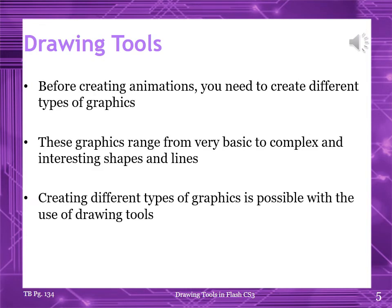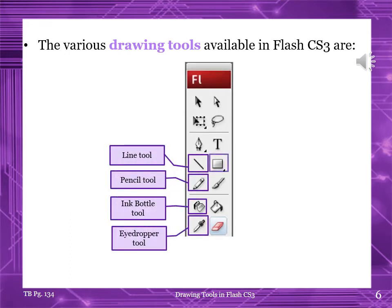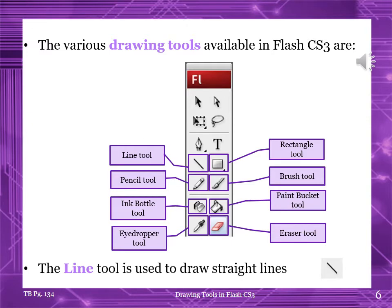Drawing tools. Before you create animation, you first need to create different types of graphics. These graphics can range from very basic to highly complex shapes and lines. Creating different types of graphics is possible with the use of drawing tools. Here are the drawing tools available in Flash CS3: line tool, pencil tool, ink bottle tool, and eyedropper tool — note that it is indicated incorrectly in the book, you can correct it. Rectangle tool, brush tool, paint bucket tool, and eraser tool.